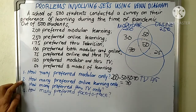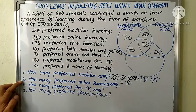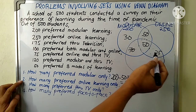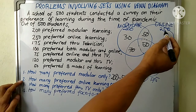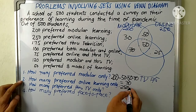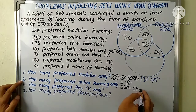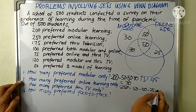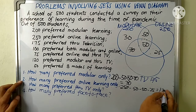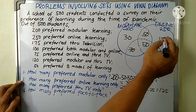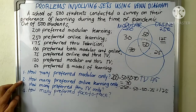Question number two: how many preferred online learning only? Since those who preferred online total 250, we calculate: 250 minus 50 minus 50 minus 25, and the answer is 125. There are 125 students who preferred online learning only.